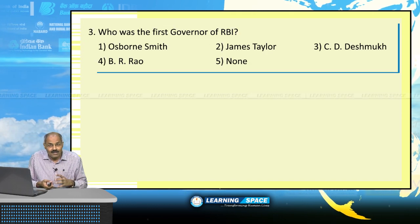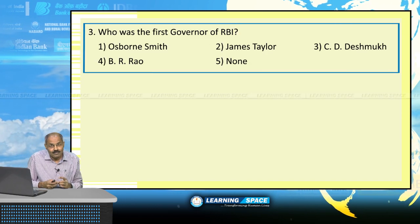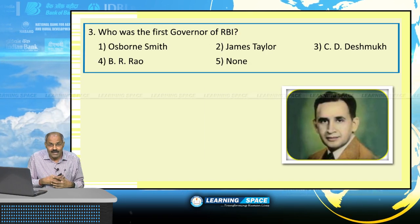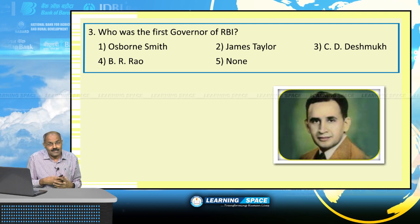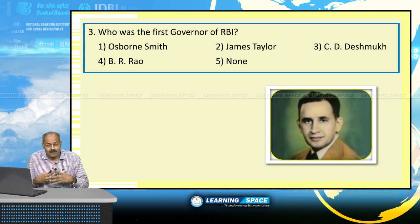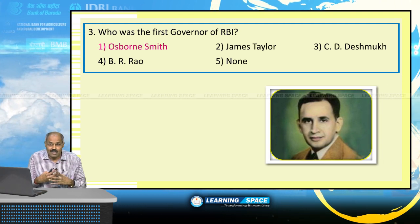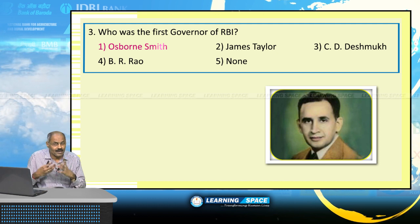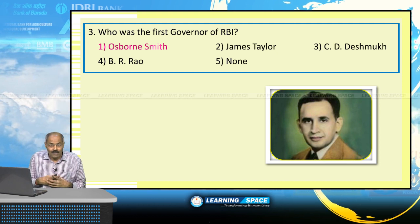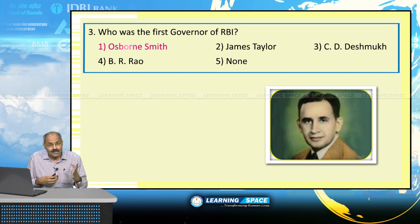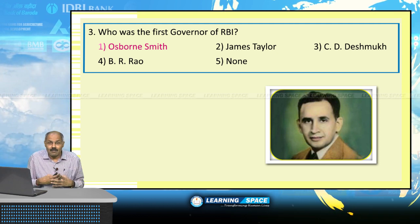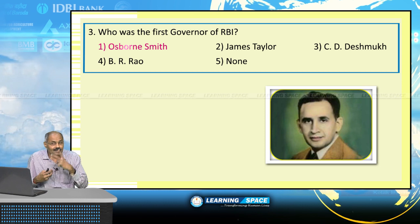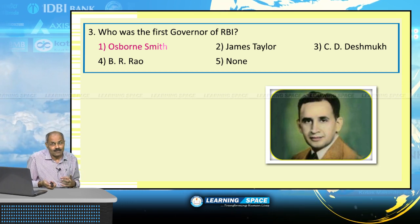The first governor of Reserve Bank of India is Osborne Smith. And the governor at the time of India's independence was C. D. Deshmukh. Please don't forget.